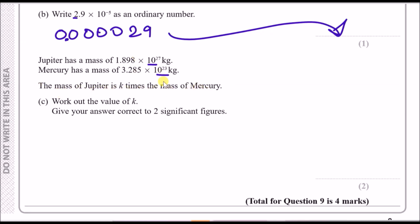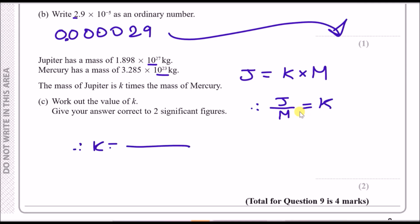The mass of Jupiter is k times the mass of Mercury, so J = k × M. To work out k, make it the subject by dividing: k = J ÷ M. So put the mass of Jupiter — 1.898 × 10²⁷ — on the top and the mass of Mercury — 3.285 × 10²³ — on the bottom of the fraction in your calculator.